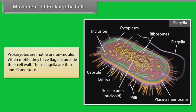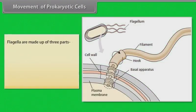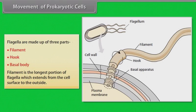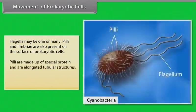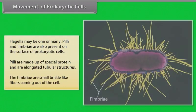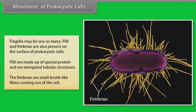Movement of prokaryotic cells: Prokaryotes are motile or non-motile. When motile, they have flagella outside their cell wall. These flagella are thin and filamentous, made up of three parts: filament, hook, and basal body. The filament is the longest portion, extending from the cell surface to the outside, and flagella may be one or many. Pili and fimbriae are also present on the surface of prokaryotic cells. Pili are made up of special protein and are elongated tubular structures, while fimbriae are small bristle-like fibers coming out of the cell.